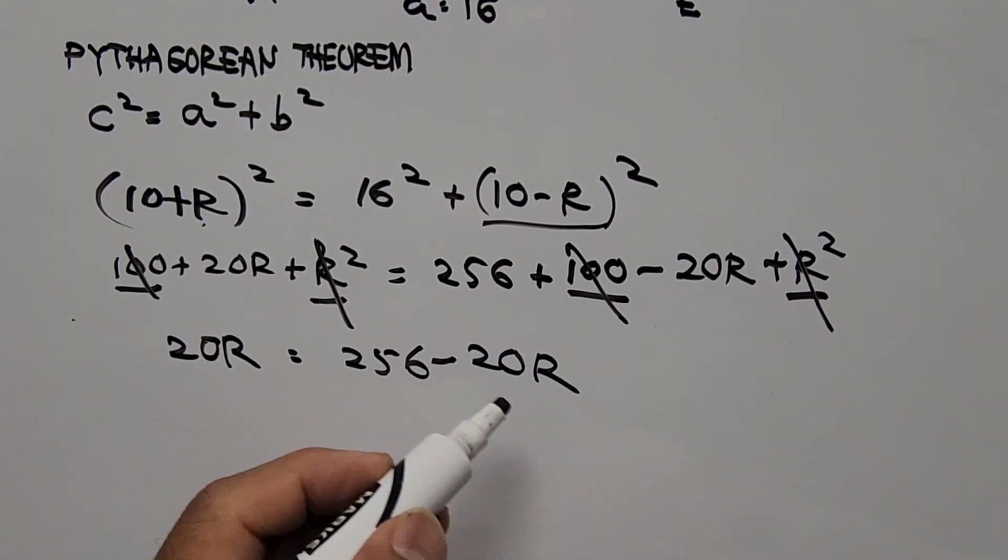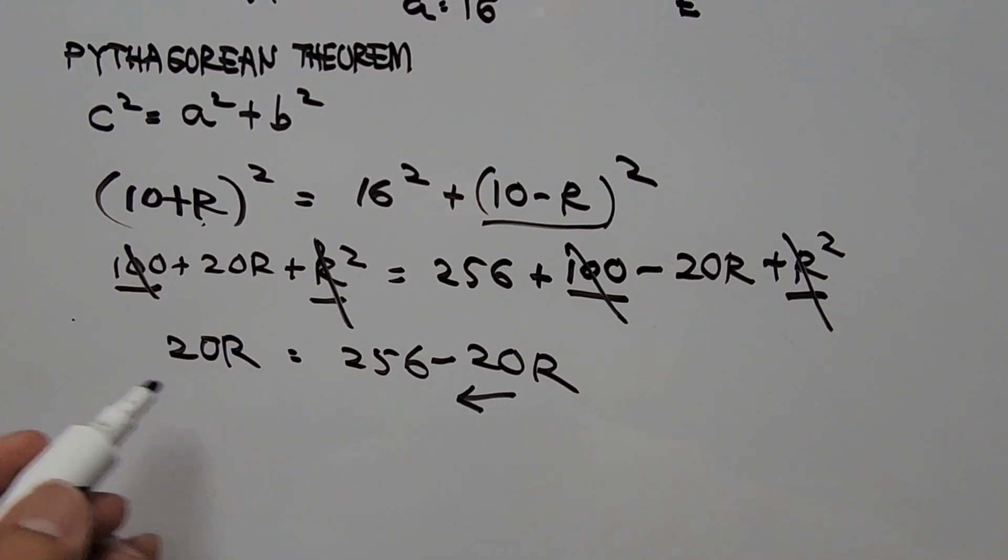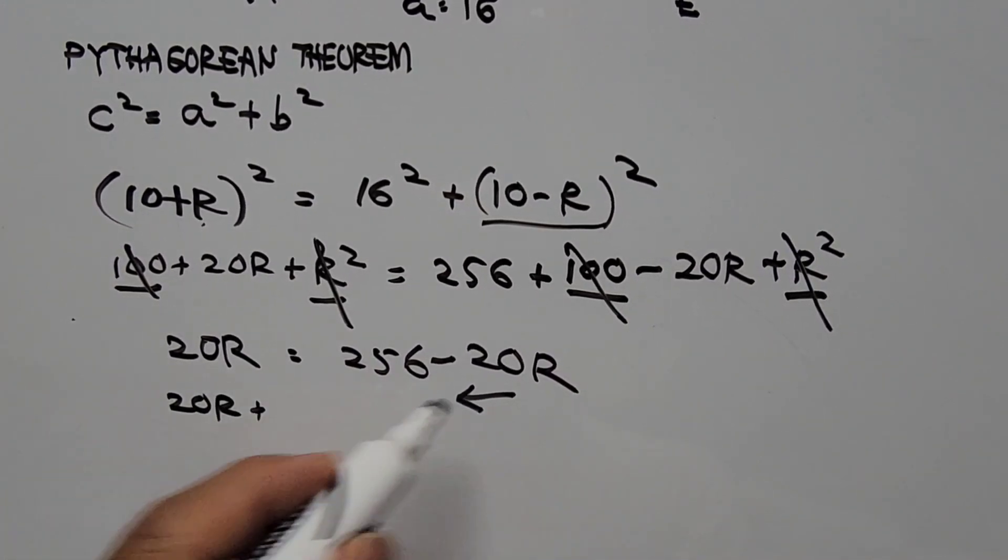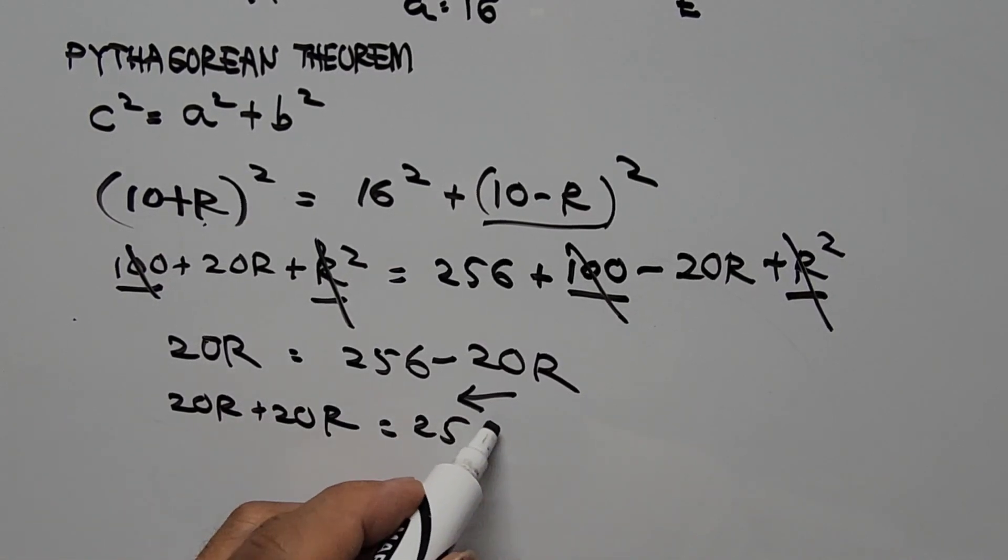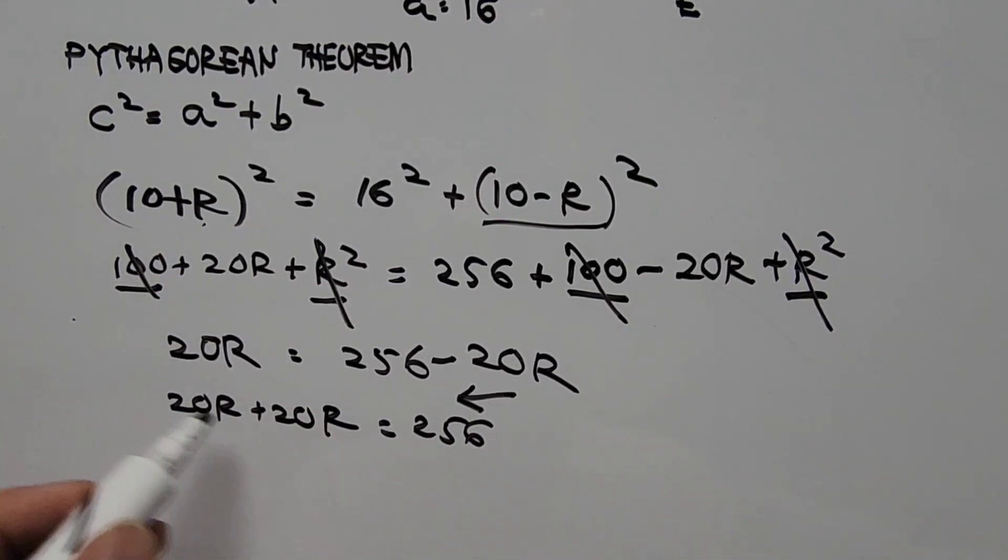Simplifying this equation further, moving 20R to the left, so we have 20R plus 20R equals 256. So this is 40R equals 256.